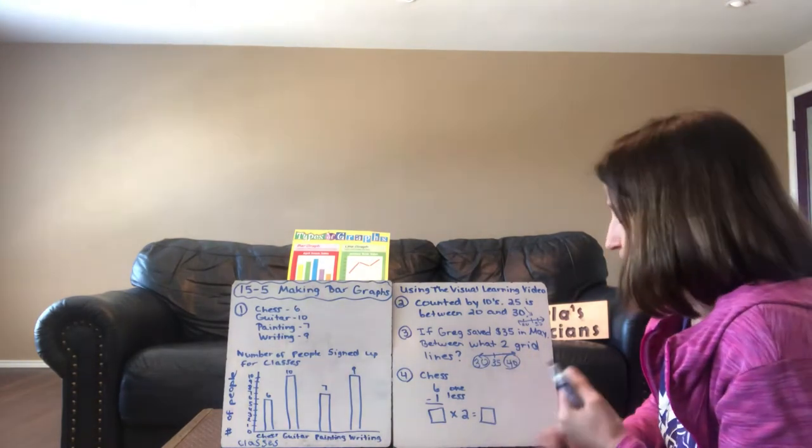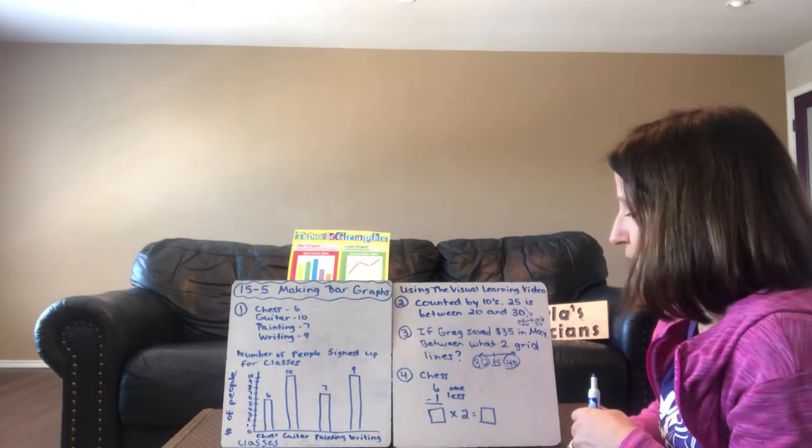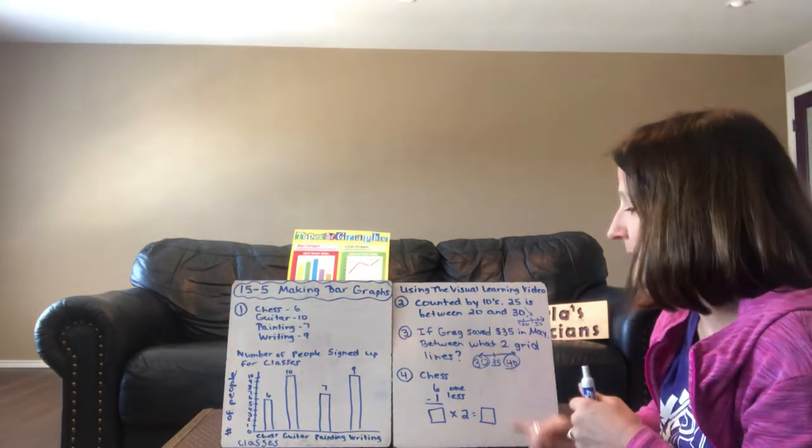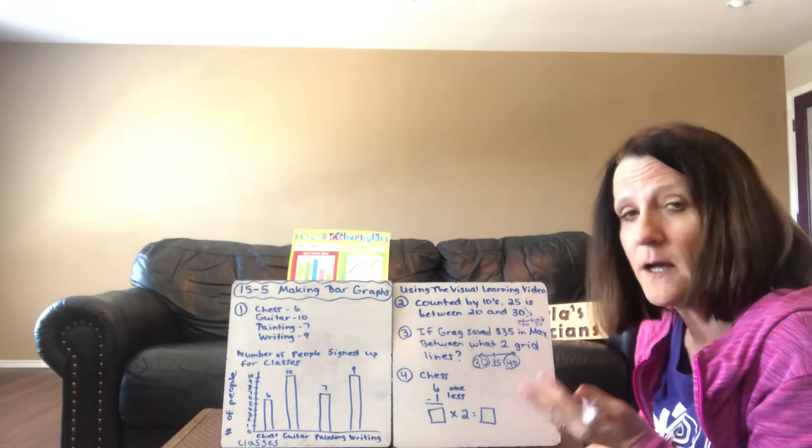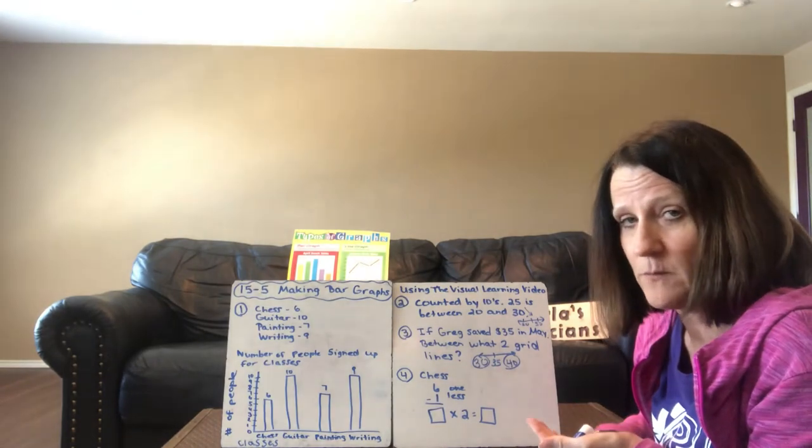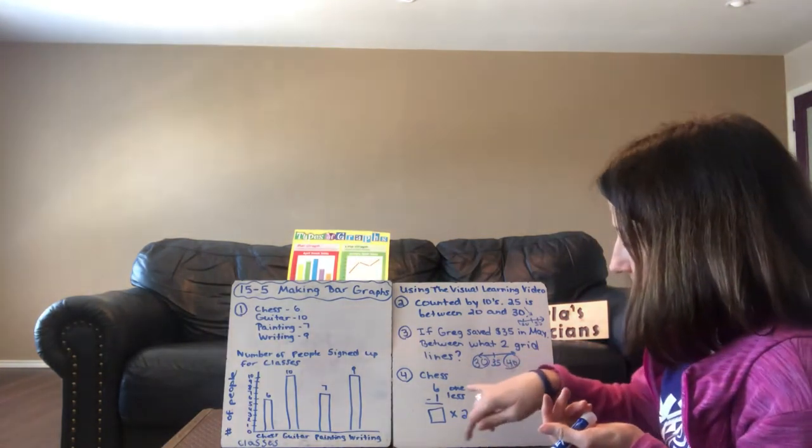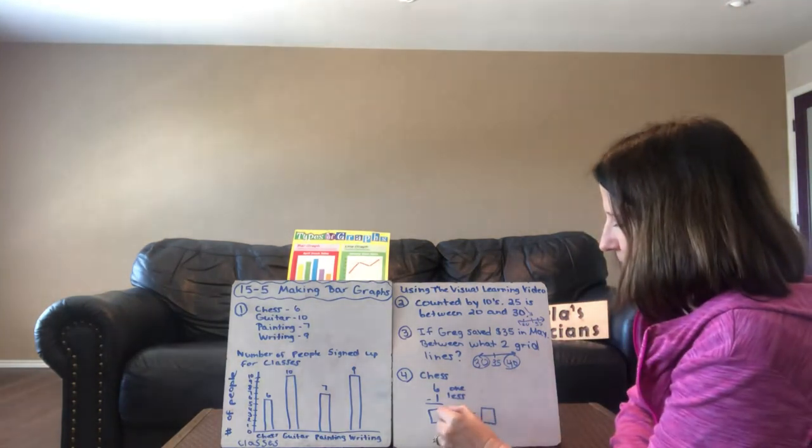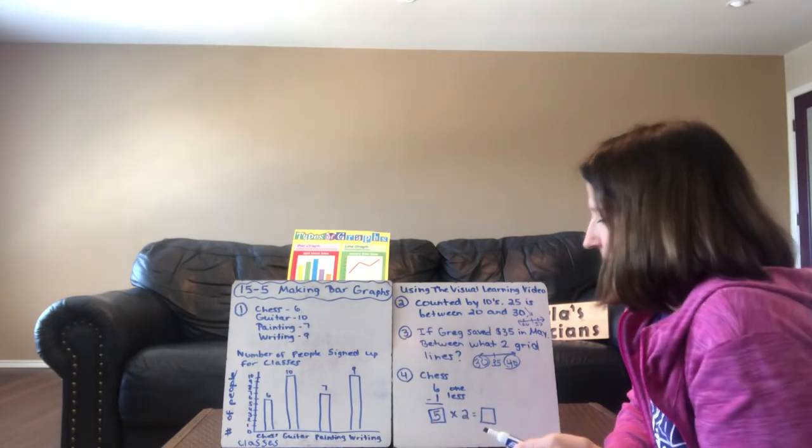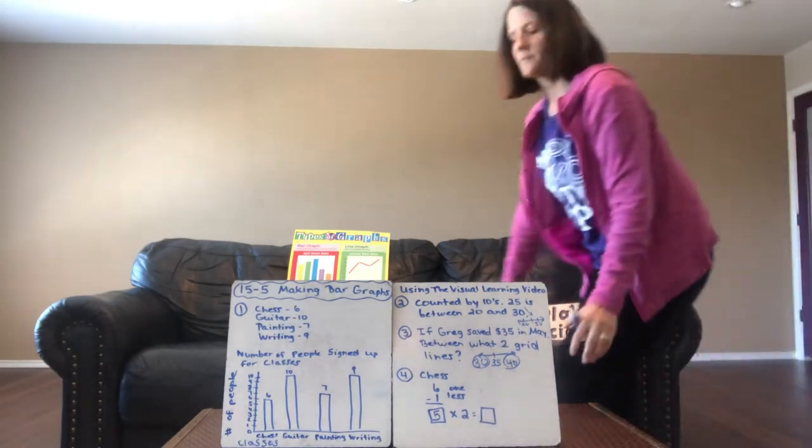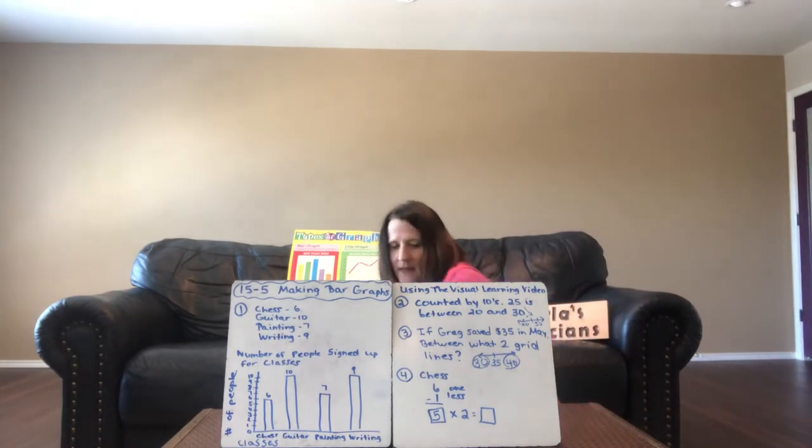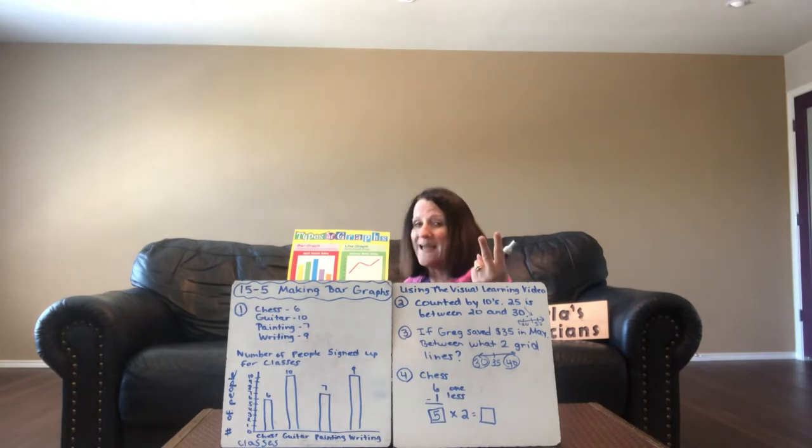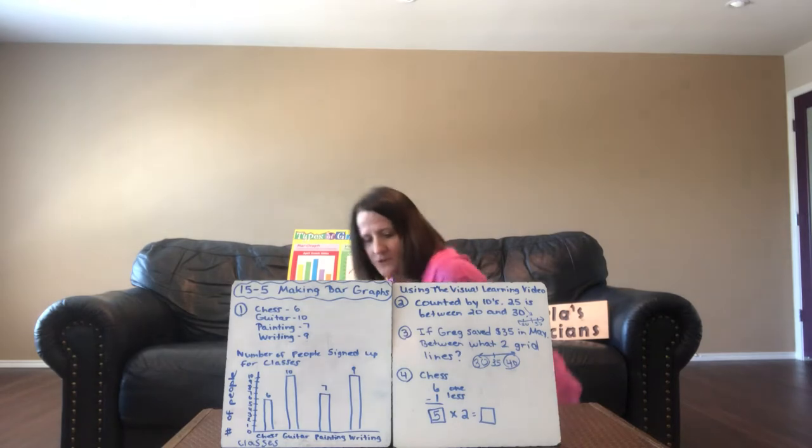On number four it said if one less player played chess. So we start with that. Six people played chess. Six minus one is five. Then it said suppose one of the students signed up for chess, in which class is the number of students twice the number now signed up for chess.